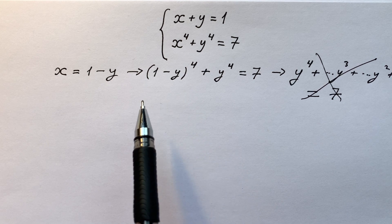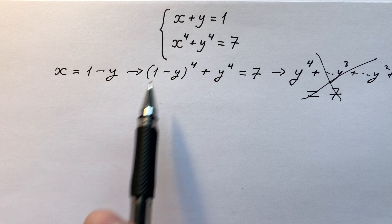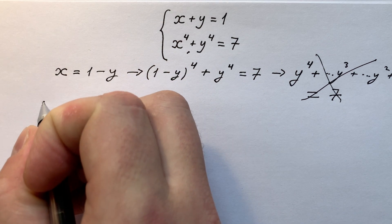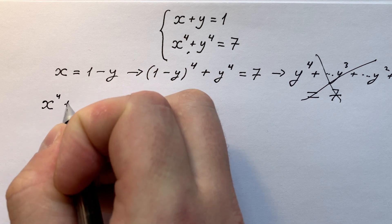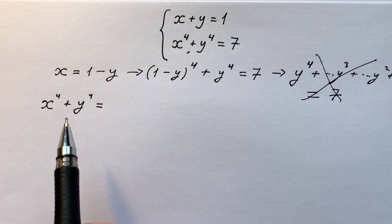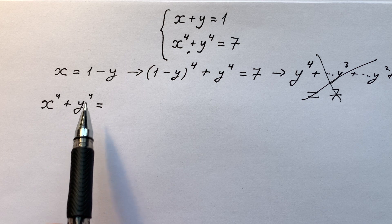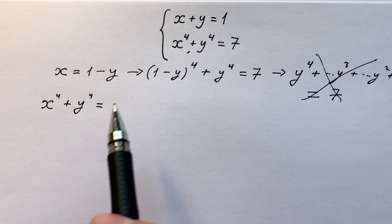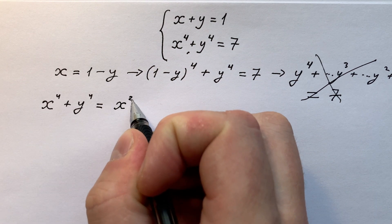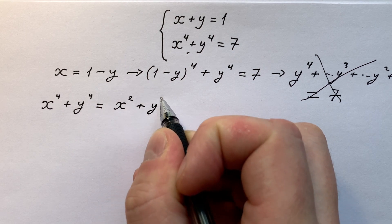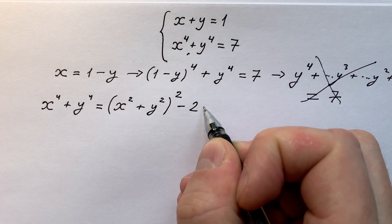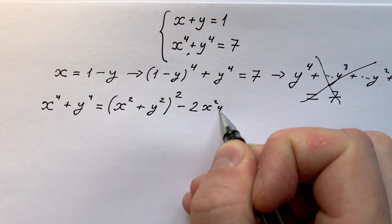If we try a really clever move, we look not at the first but at the second equation. x to the power of 4 plus y to the power of 4 equals 7 — doesn't that remind you of something? It can remind us of a perfect square. We can write this expression as (x² + y²)², with a minus of 2 times x² times y².